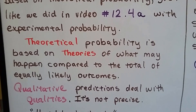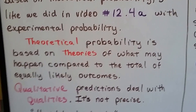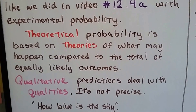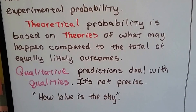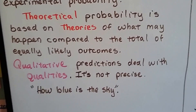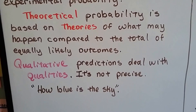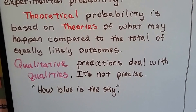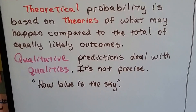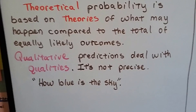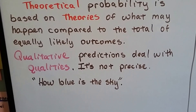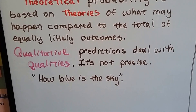Theoretical probability is based on theories of what may happen compared to the total of equally likely outcomes. Qualitative predictions deal with qualities — it's not precise, not like quantitative which deals with numbers. Qualitative is like: how blue is the sky? Did you like that movie?